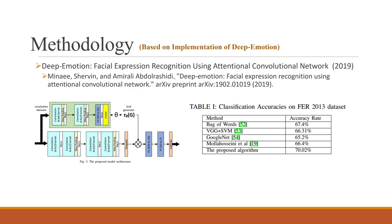Our methodology is based on the implementation of the Deep Emotion paper, which is a very famous paper achieving around 70% accuracy on FER 2013. In contrast to other deep learning architectures for image classification that typically exceed 90%, this dataset is so complex that even in 2019 only 70% accuracy was achieved. We will explain the paper's architecture, including convolutional neural networks, ReLU, and other layers.